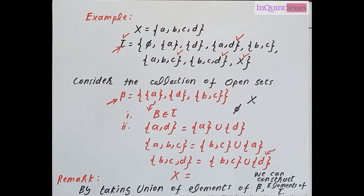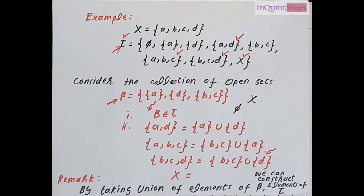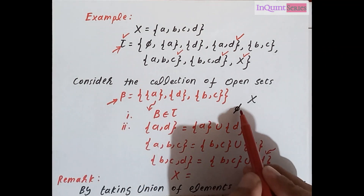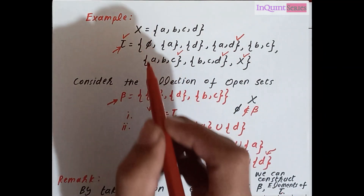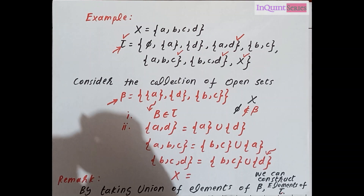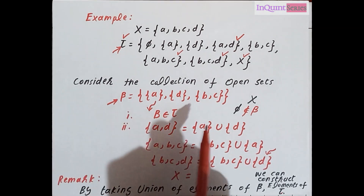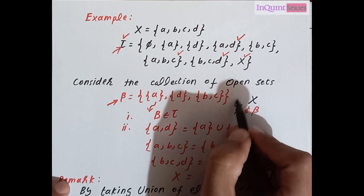Here we have a remark: by taking the union of the elements of that collection beta we can construct the elements of the topology. You may have a question — phi is not in that collection beta, so how does it appear in the topology? In the definition we say every open set can be expressed as a union of basis elements.